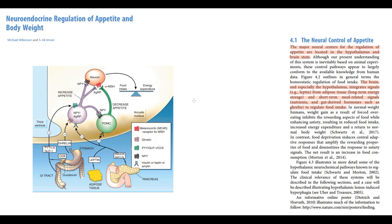Appetite and body weight are regulated by the nervous and endocrine systems. The major neural centers of appetite regulation are located in the hypothalamus and brainstem. The function of these neural centers is to receive signals from the periphery and then make a decision — to increase or decrease appetite. These peripheral signals are small substances produced by peripheral organs.